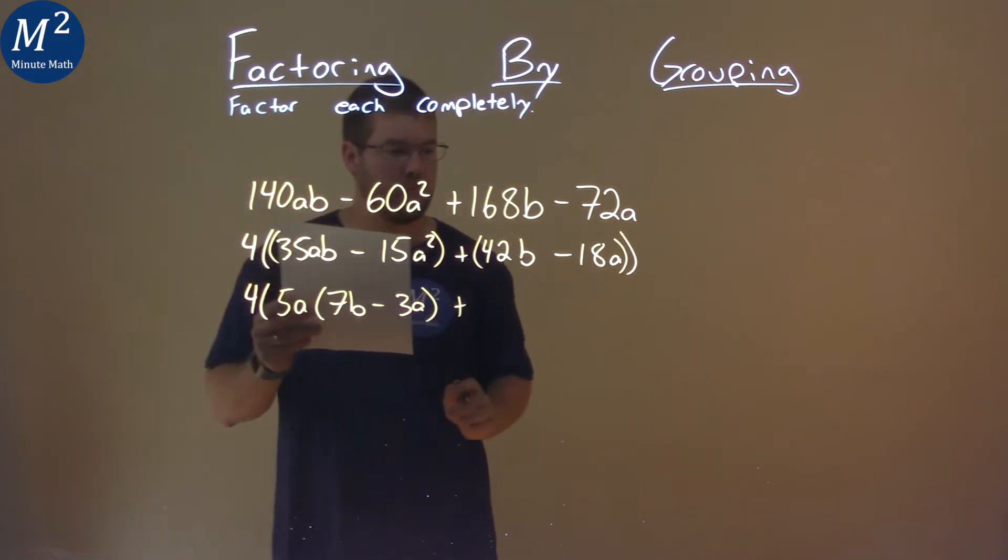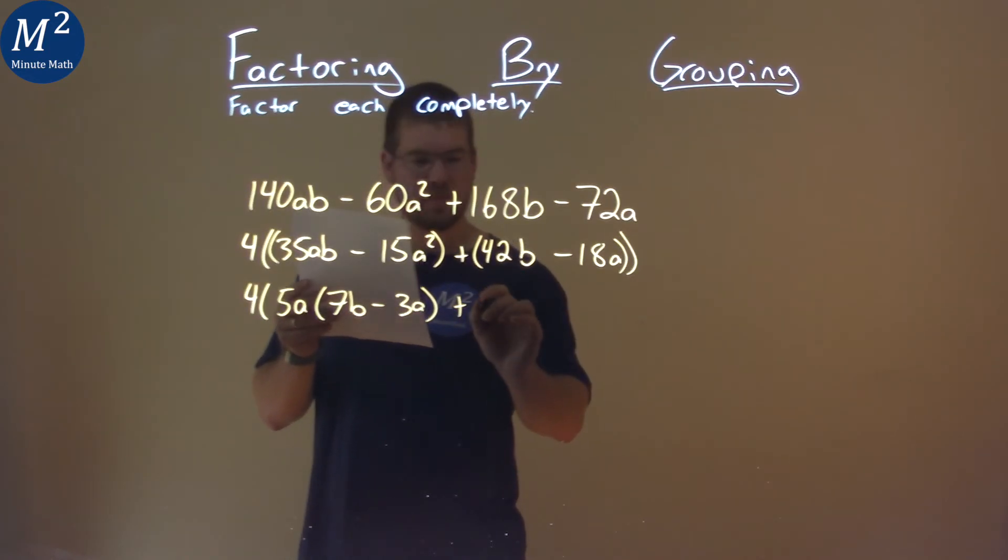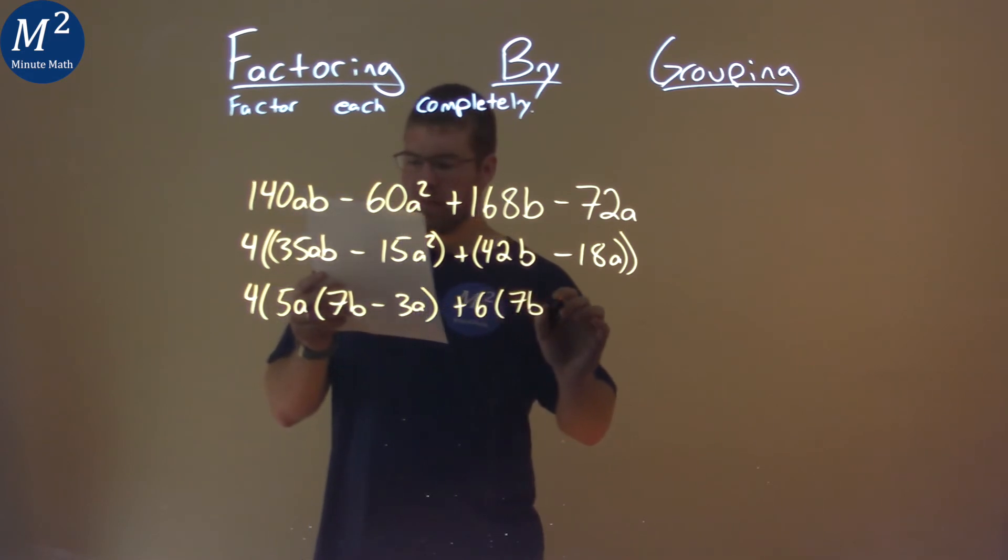Plus here, 42b minus 18a. I can pull out a 6, 6s in both parts here, plus 6, and I'm left with 7b minus 3a.